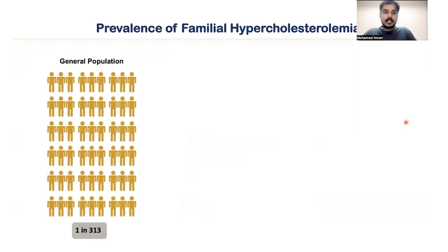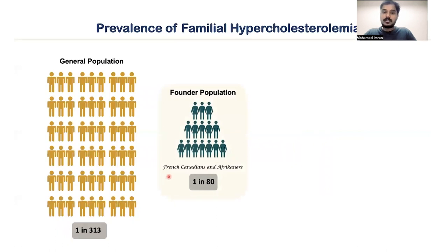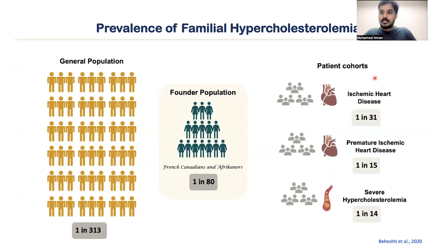Talking about the prevalence of familial hypercholesterolemia in the general population worldwide, the prevalence is around one in 313 individuals. In founder populations such as French Canadians and South Africans, the prevalence is around one in 80. In patient cohorts with ischemic heart disease, the prevalence is 10-fold higher at around one in 31. In premature ischemic heart disease cohorts, it is 20-fold higher at around one in 15, and in severe hypercholesterolemia cohorts, the prevalence is around one in 14.